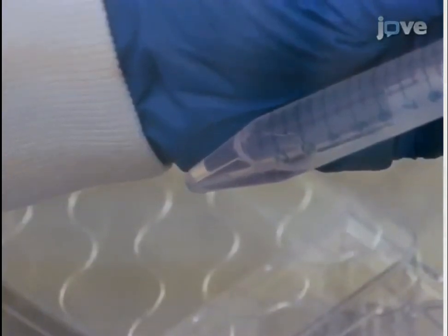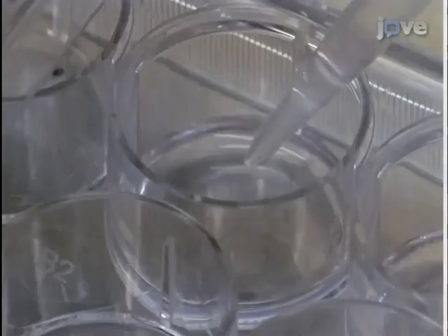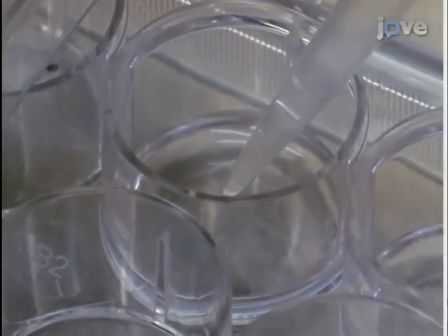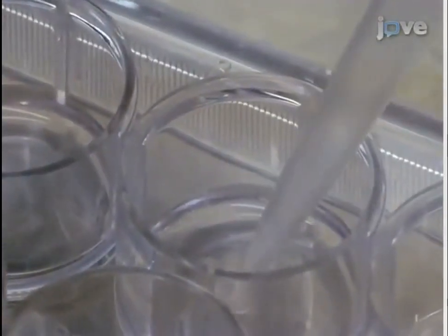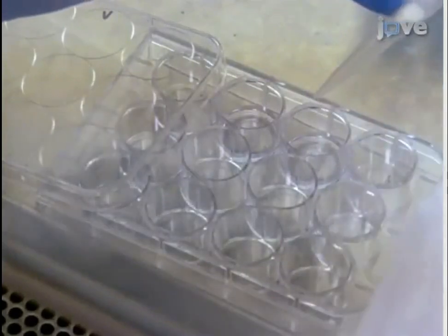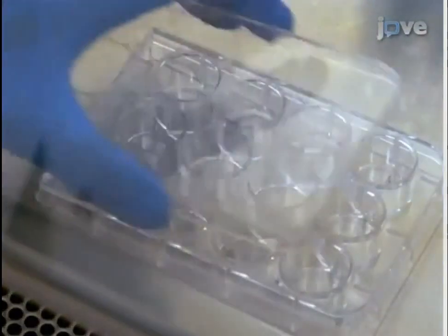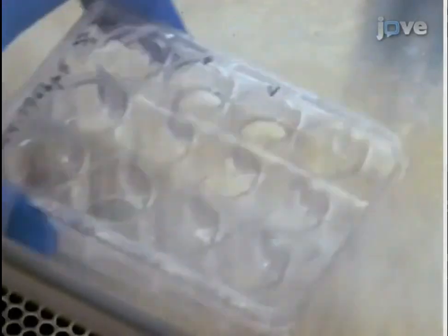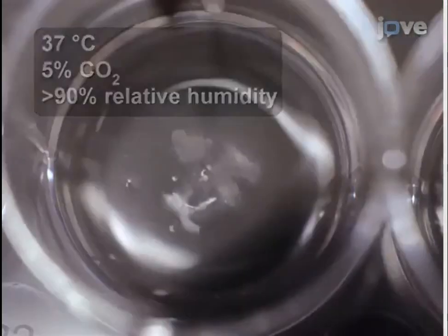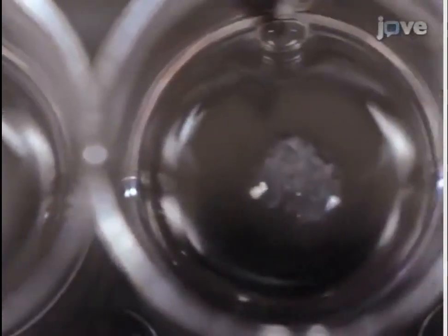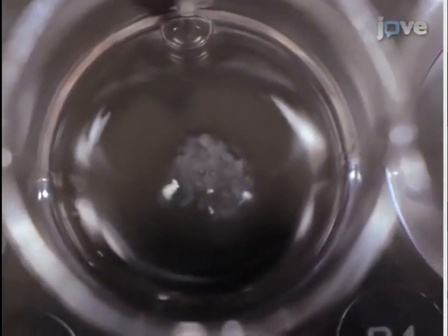Transfer the pellet into the middle of the wells that contain media. Keep the biopsy together as a cluster of cells; do not break it up to make a single cell suspension. A good biopsy should yield up to four wells that can be seeded. Put the plate into a tissue culture incubator and culture the cells following the protocol in the accompanying manuscript.